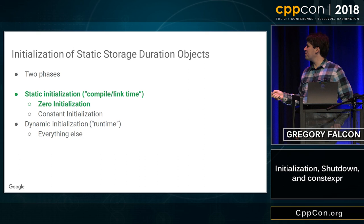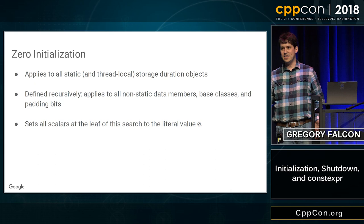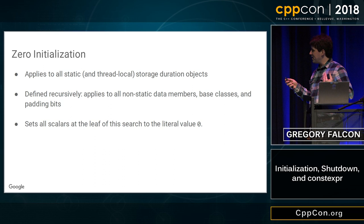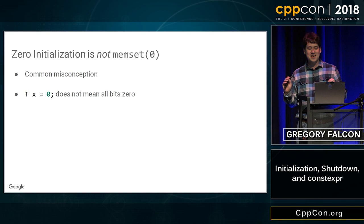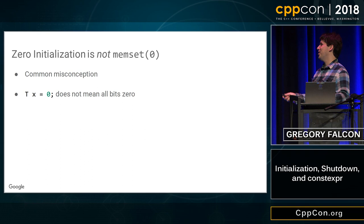Zero initialization is defined recursively. You dig into the sub-objects of your objects, and eventually you get down to the leaf objects — there's just going to be a bunch of scalars at the end of this tree, and you end up setting them all to zero. You also set any padding bits to zero. It gets your object in a clean, known state before the constructor actually runs on it. Zero initialization is not memset zero — it doesn't mean the same thing, and I see this misconception everywhere.